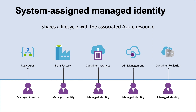You can enable a system assigned managed identity directly on the Azure service instance. Azure creates an identity for the instance in the Azure AD tenant trusted by the subscription of the instance. Credentials are provisioned onto the instance after the identity is created. The lifecycle of a system assigned identity is directly linked to the Azure service instance that it's enabled on.